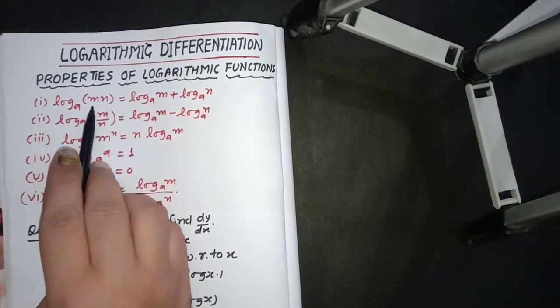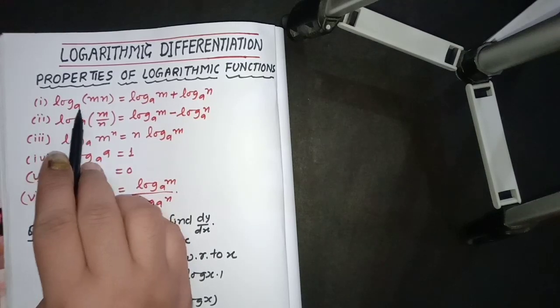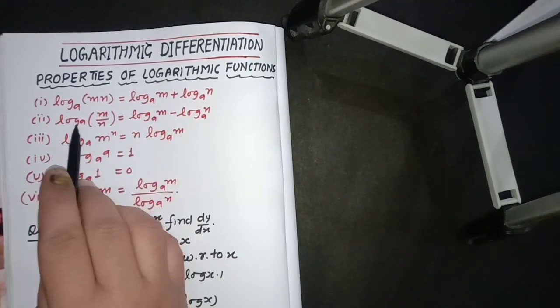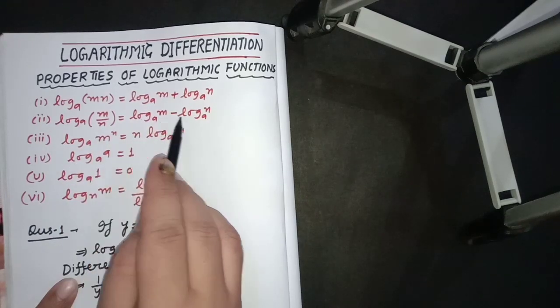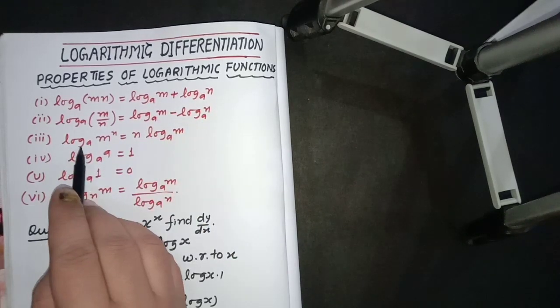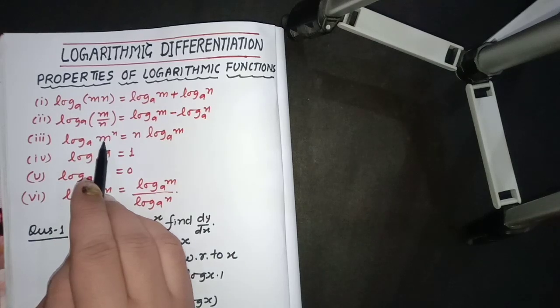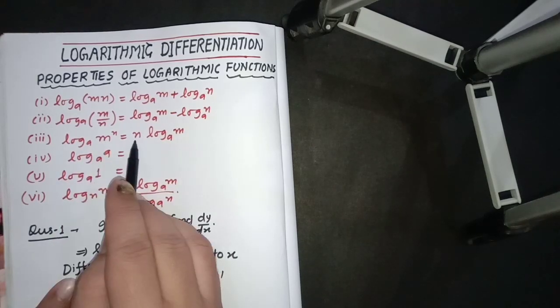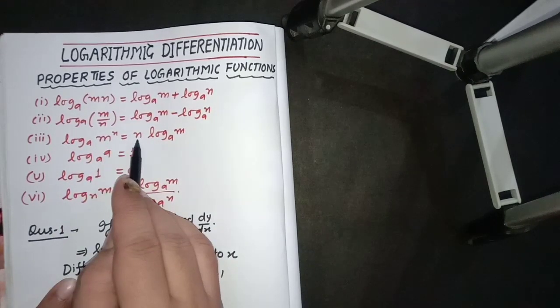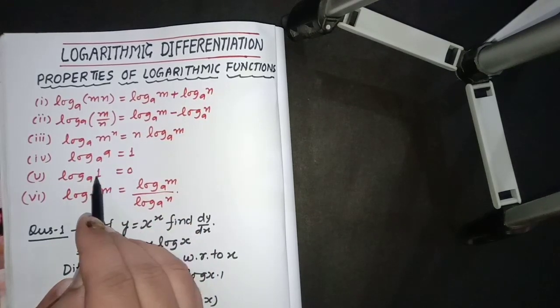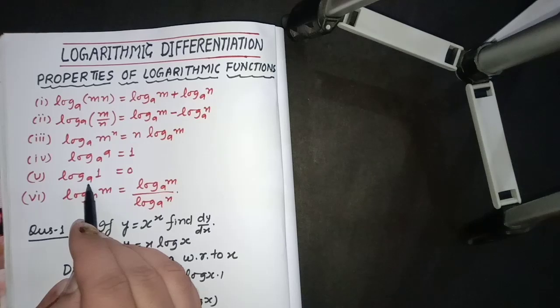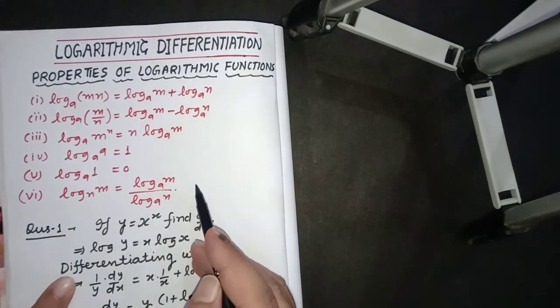These properties are: if there are two numbers in multiplication, log mn at same base, that will be log m plus log n. Similarly, in case of division, that will be log m minus log n separately. And log base a of m^n, that will be n log m - the power will come in starting. Logarithm of same number with same base will be equal to one, and logarithm of one at any base will be zero.